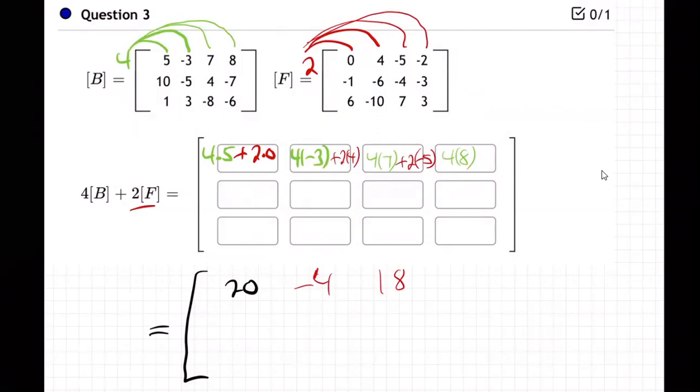But let's first finish doing this one by hand. Four times eight plus two times minus two. That's 32 minus 4, which is 28.